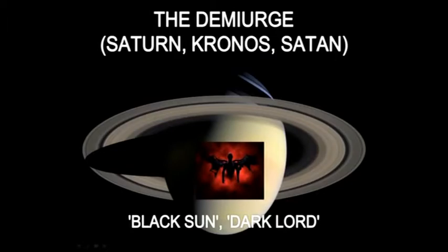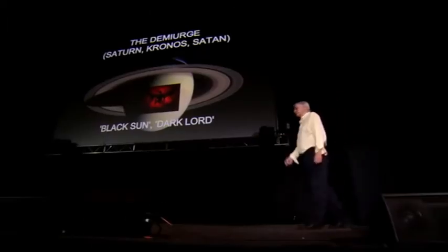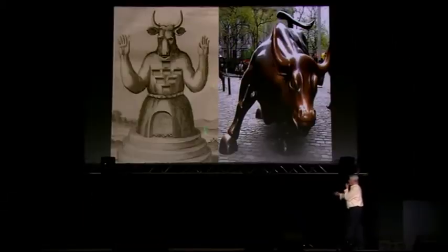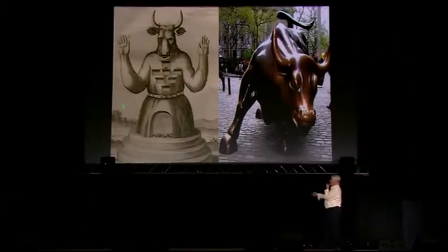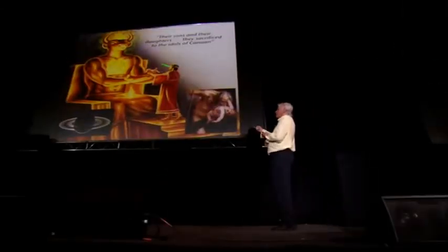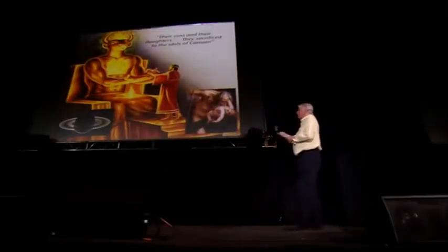Saturn, Kronos, Satan, Black Sun, Dark Lord — they're all the same thing, expressions of this force. Here you have Moloch, who they worship at Bohemian Grove — a god of Saturn, this recurring theme. They also represent Moloch as a bull, which is the symbol of Wall Street. And the golden calf in the Bible is Moloch — Saturn.